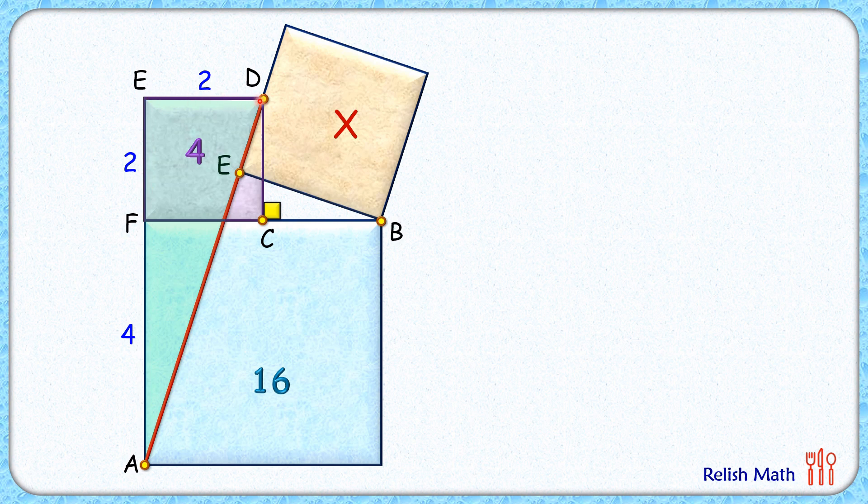Now here, this FC length is also 2 centimeters. CD is also 2. Now this full length FB is 4 centimeters. The CB length will be 2 centimeters.